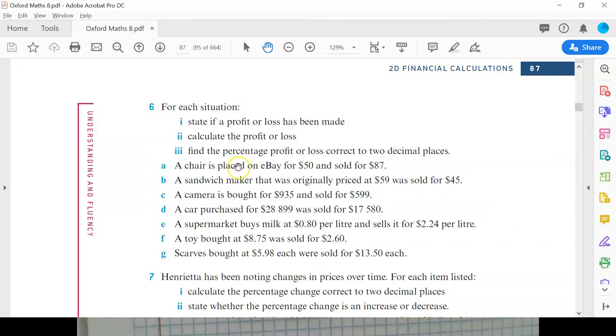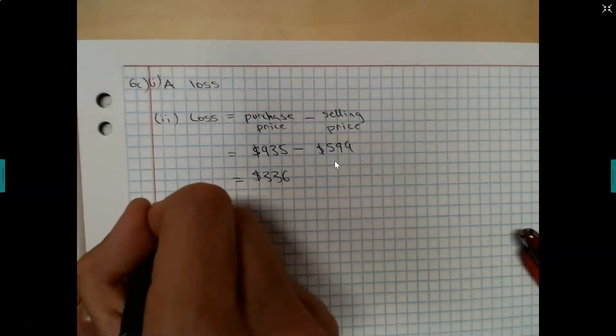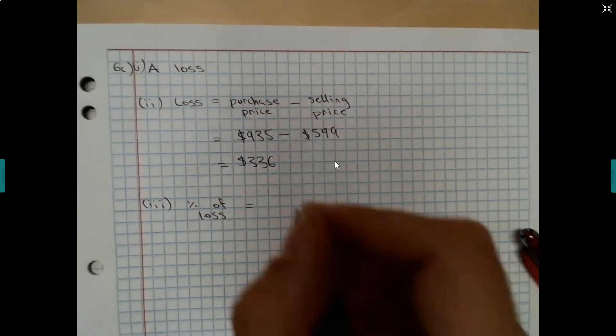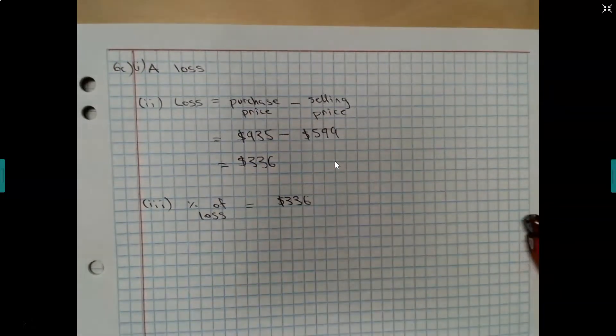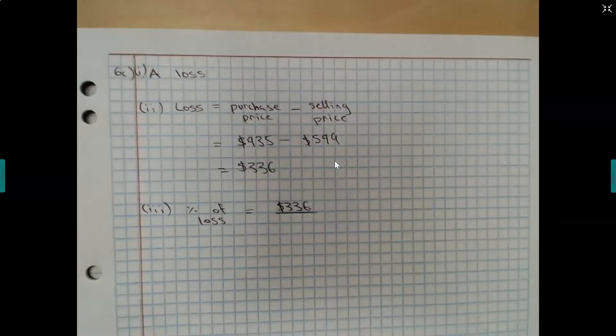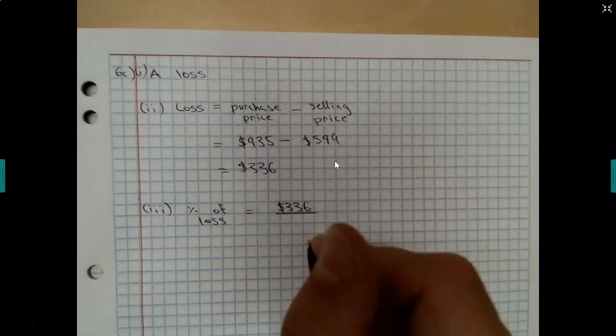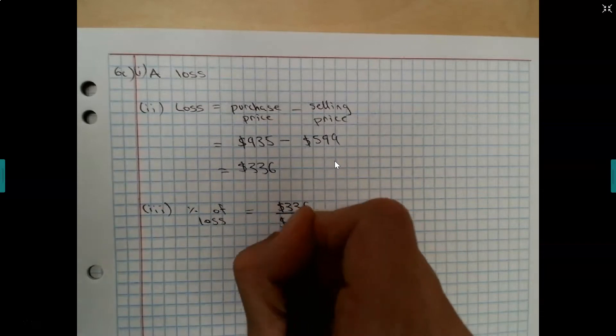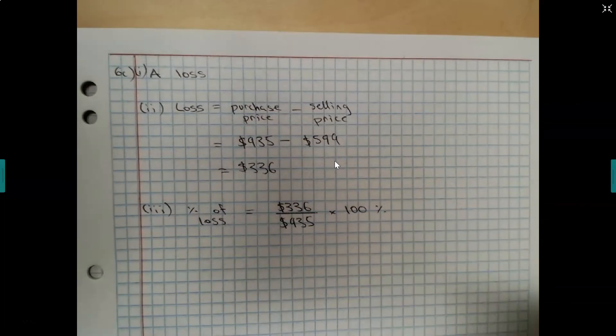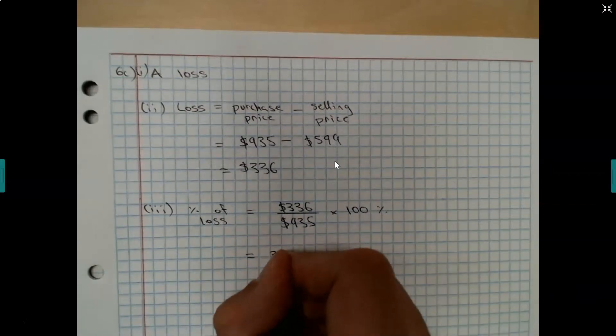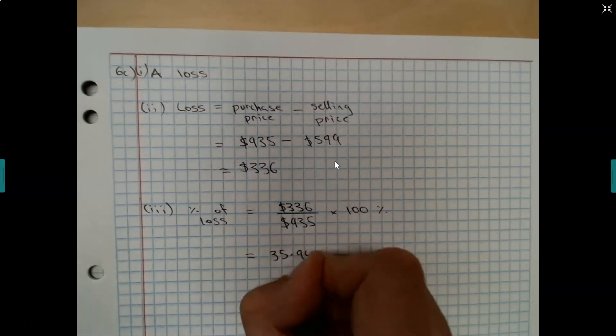And then the last bit of the question wants us to find the percentage of profit or loss. So this was the very first thing that we noted today, to find a percentage of profit or loss. So percentage of loss is equal to, it's going to be whatever the loss was, which was $336, divided by the original cost of the purchase price, which was $935, times $100. And that's going to give us a percentage. So let's have a look at what this loss was for us. Divide by 935 times $100 comes out as 35.94% loss.